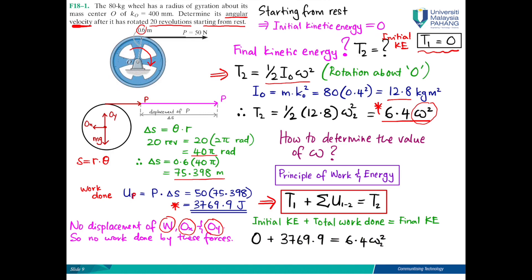Therefore you can easily solve for omega_2, which is equal to 24.27 rad per second. This is the final answer and this is the angular velocity of the wheel after it has rotated 20 revolutions.